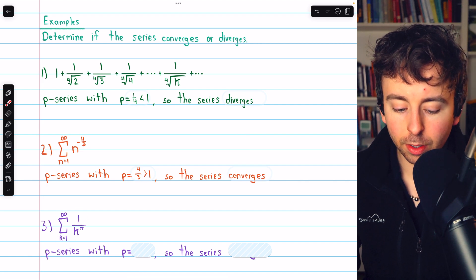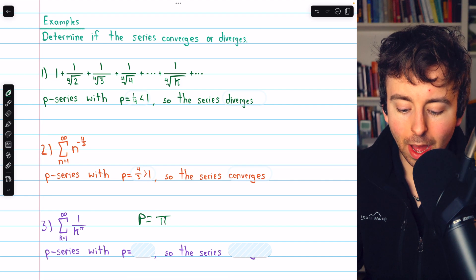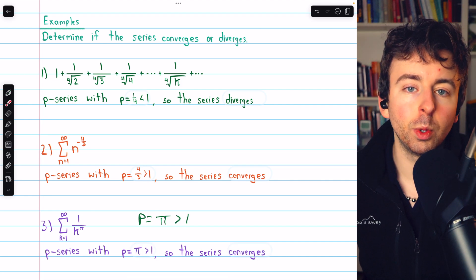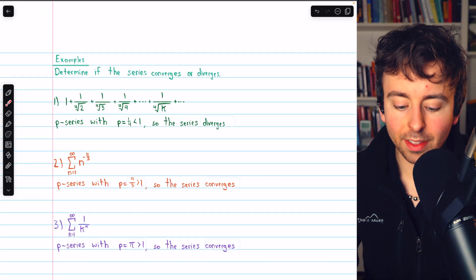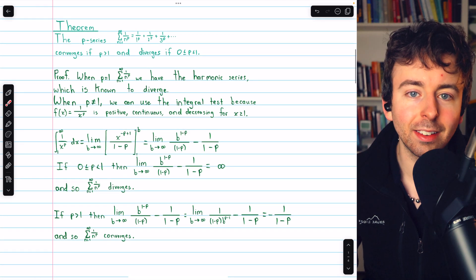Finally, in this last example, we have a p-series with p equal to π. π is definitely greater than 1. And since that's the case, this series will converge. So that's a quick look at the behavior of p-series and how to prove that behavior with the integral test.